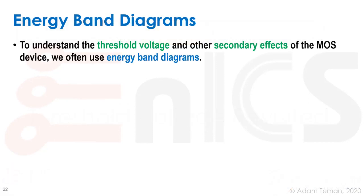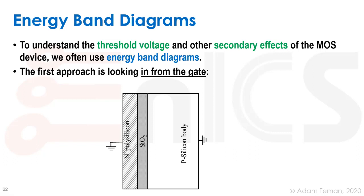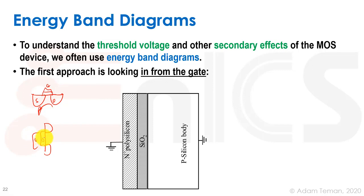Before we start, I want to remind you about energy band diagrams that you probably learned about in some sort of semiconductor physics course. We look at the semiconductor device, the MOSFET, kind of on its side. So if we usually take our MOSFET in this course, we're going to turn it on its side, looking at it this way — with the source, drain, gate, oxide, and substrate.